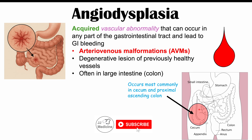The proximal ascending colon is simply the first part of the ascending colon. About 77% of cases are found in the cecum and proximal ascending colon, so the majority of cases occur in this area.